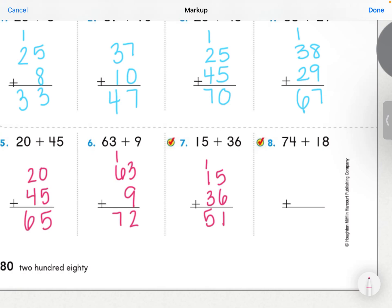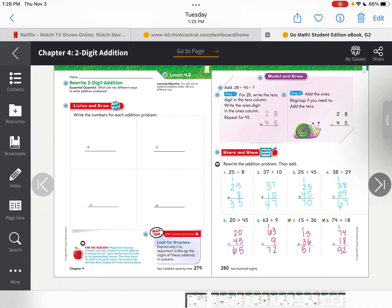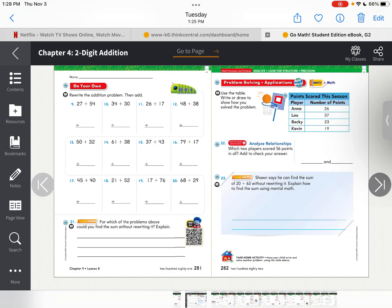Let's do that same thing with number 8. 74 plus 18. Go ahead and write your addition sentence. Pause the video, solve it, and see if we match. I'm going to add my ones. 4 plus 8 is 12. I've got to carry my 10 over. 7, 8, 9, 92. Let's take a look at the next page. Page 281.